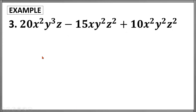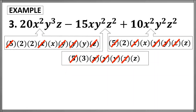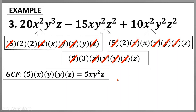For our last example, let's have 20x squared y cubed z minus 15xy squared z squared plus 10x squared y squared z squared. Expressing these three terms as a product of primes, we will have the prime factorization — as you can see, it is quite long. This would take time. Some of you may have a technique to identify the GCF without doing this whole thing, but for those who have forgotten how to get the GCF, this whole process might help. Identifying their common factors: we have 5, x, y, another y, and a z. The product of these common factors is 5xy squared z, which will be our GCF.